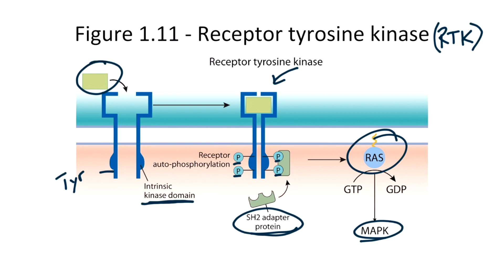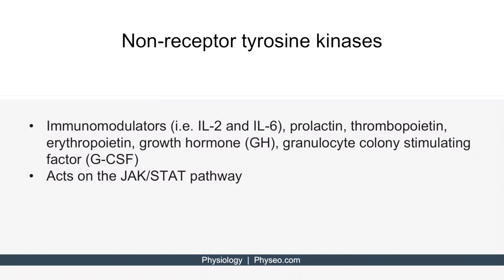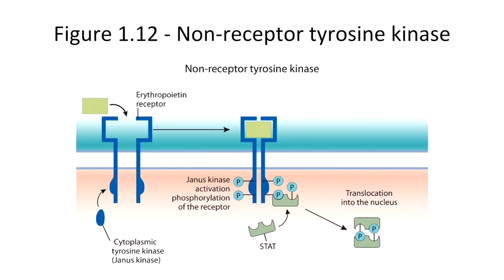Now let's look at non-receptor tyrosine kinases. Ligands that bind to non-receptor tyrosine kinases include immunomodulators such as IL-2 and IL-6, prolactin, thrombopoietin, erythropoietin, growth hormone, and granulocyte colony stimulating factor. For Step 1, you need to know that ligands that bind to non-receptor tyrosine kinases ultimately regulate the JAK-STAT pathway. This is Figure 1.12, which shows a non-receptor tyrosine kinase, or NRTK. An NRTK acts as a receptor but does not have intrinsic kinase activity — hence the name non-receptor tyrosine kinase. Instead, NRTKs are associated with a cytoplasmic protein called Janus kinase, or JAK, which is responsible for the kinase activity.